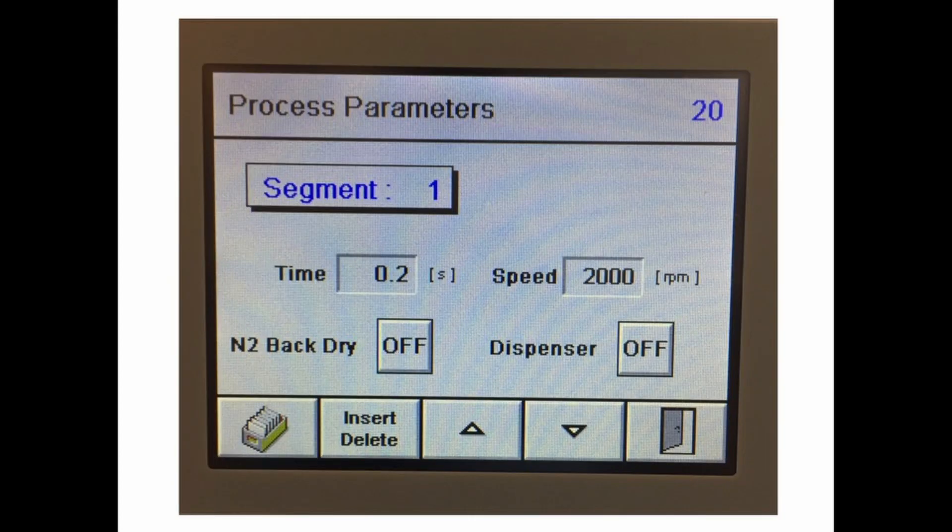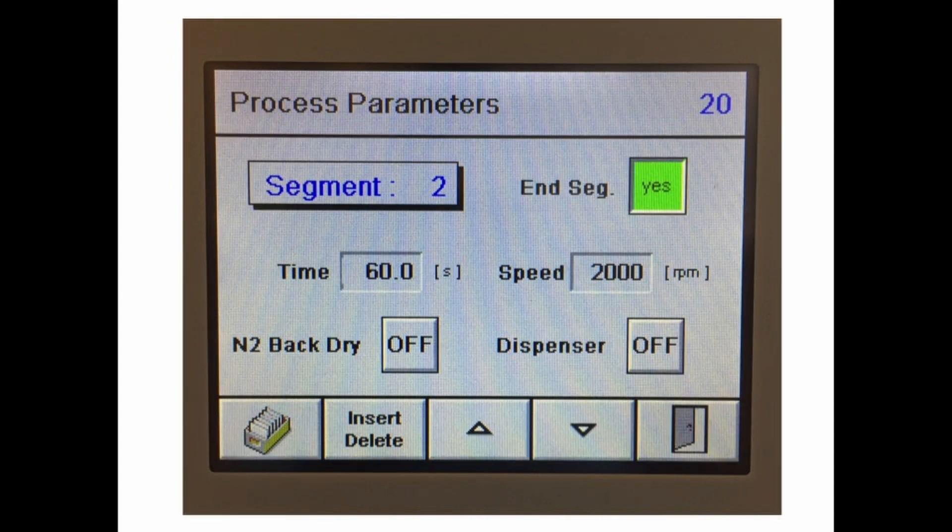The spin coating recipe is broken into individual segments. The first segment is used to define the acceleration of the spin coater, while all subsequent segments have a defined speed and duration.